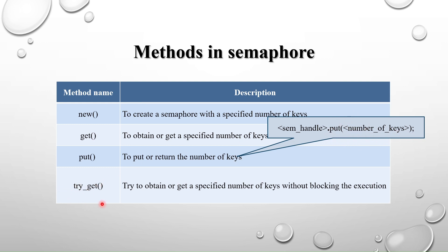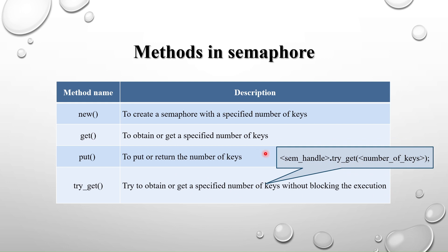The last method is `try_get` — it tries to obtain a specified number of keys without blocking execution. The syntax is: `sem_handle.try_get(number_of_keys)`. The difference between get and try_get is that get is blocking — it will not unblock the process until the keys are available — while try_get is non-blocking. try_get is a function that returns 1 if the key is available in the bucket, or 0 if not.